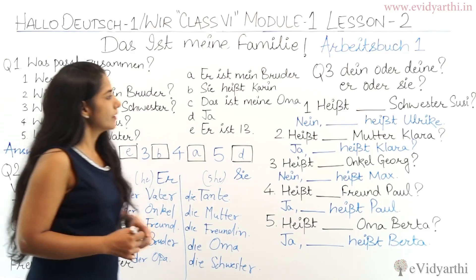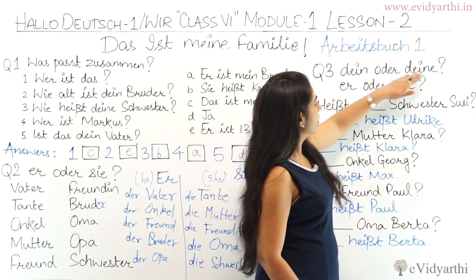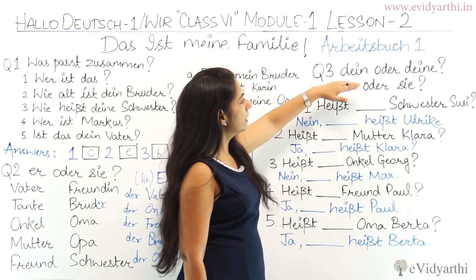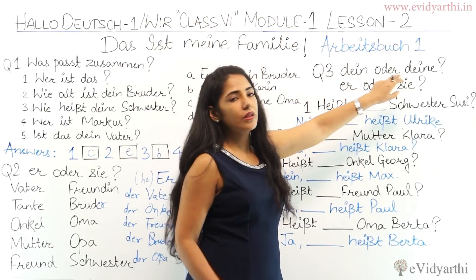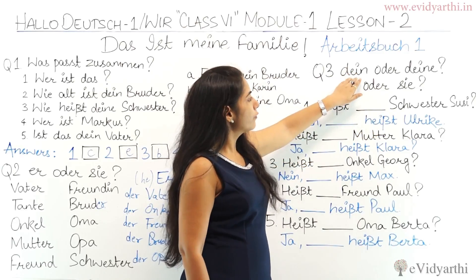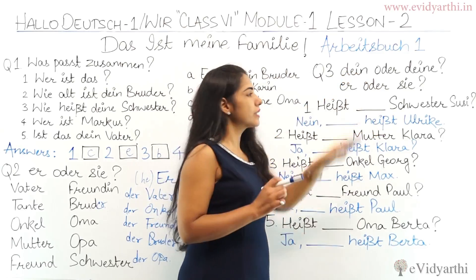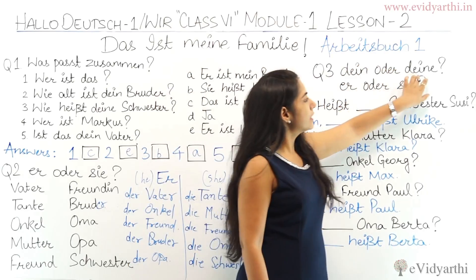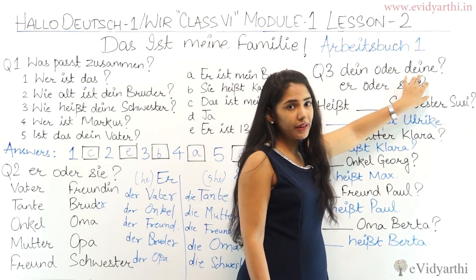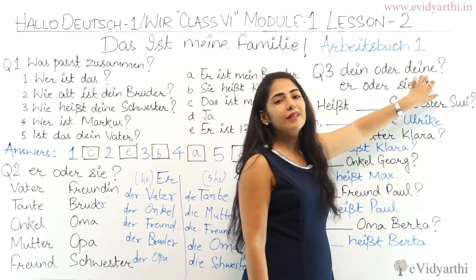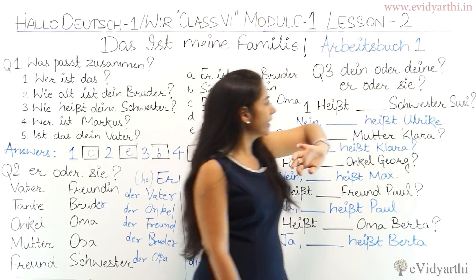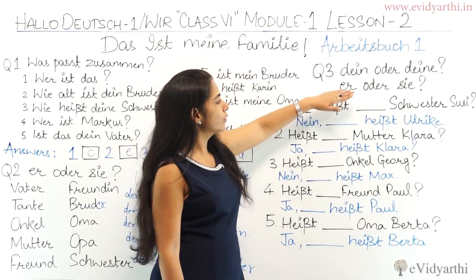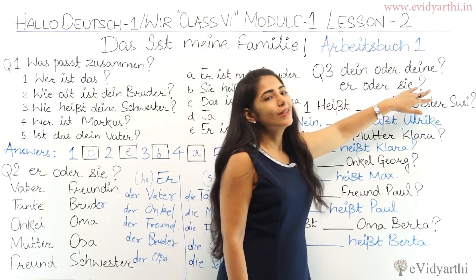Let's move to the next exercise: 'dein' or 'deine' — and 'er' or 'sie.' 'Dein' or 'deine' means 'your.' You have to identify: if the noun is masculine, then you would use 'dein.' If it's feminine, then you would use 'deine' with -e at the end. You have already seen where to use 'er' and where to use 'sie.'